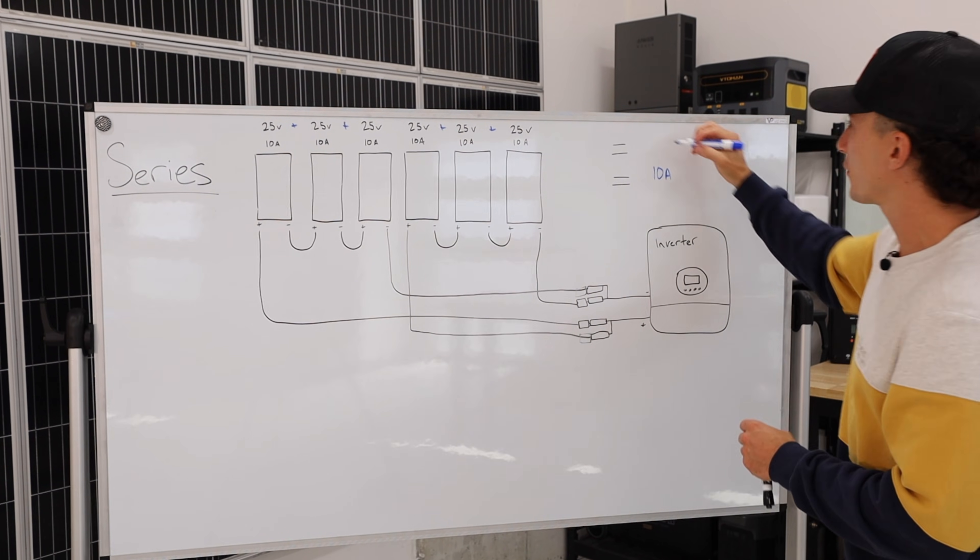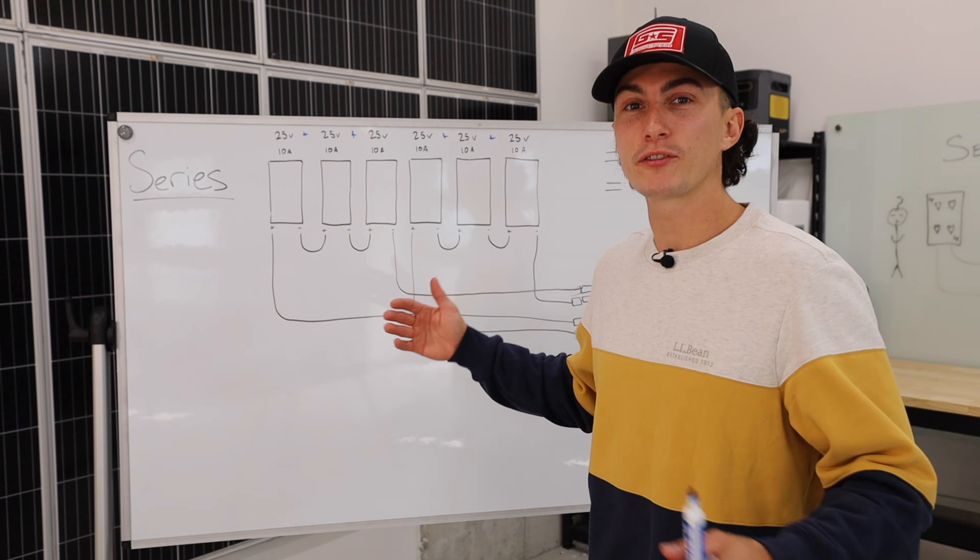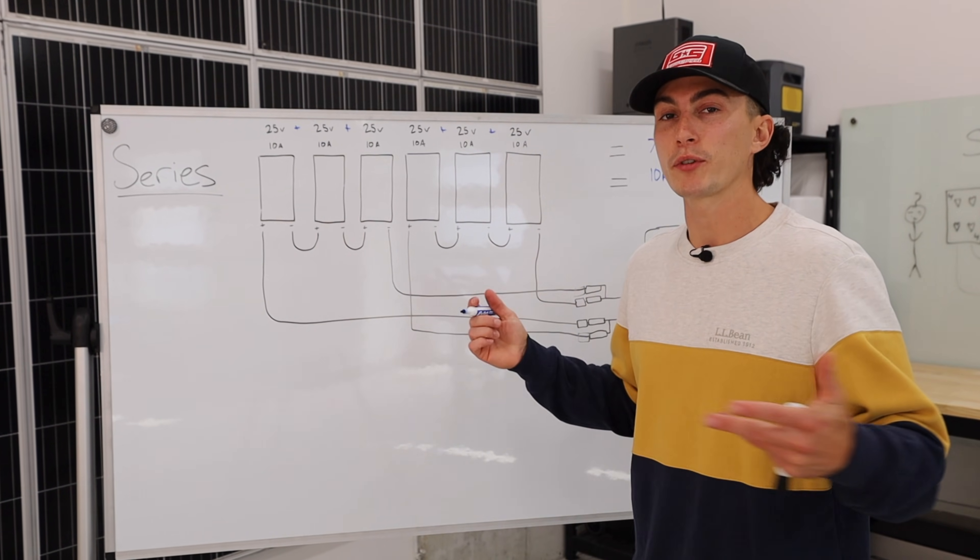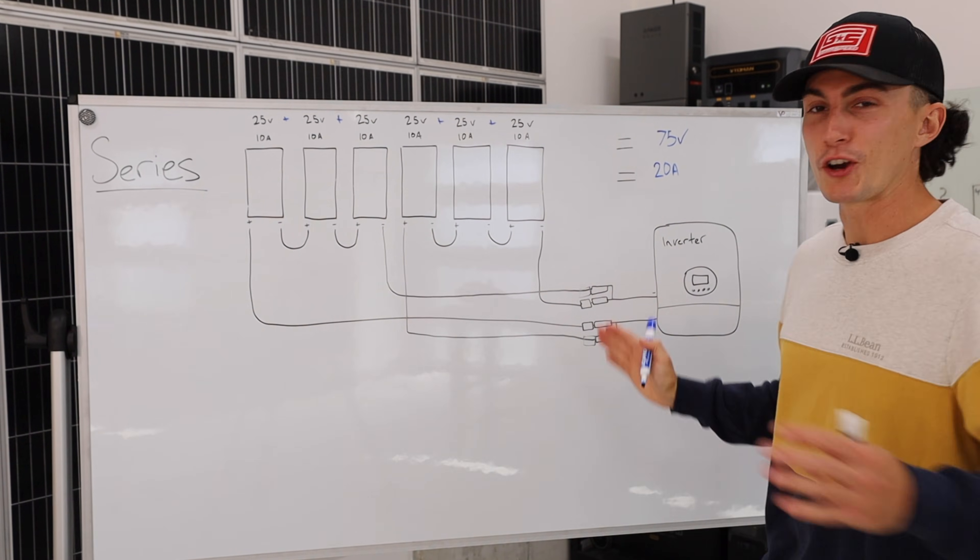And then because you have two strings of 10 amps coming in, the amps actually just double and you end up with 20 amps. That is the only way that you can actually wire this set of six panels into that example Rich Solar inverter.